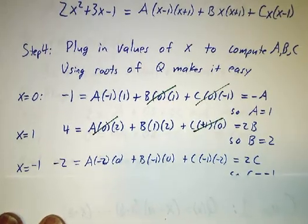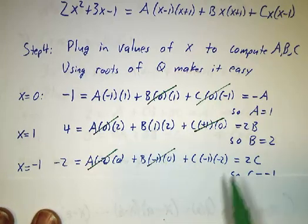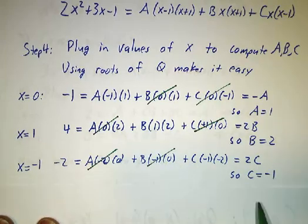You plug in x equals minus 1, and A doesn't contribute, and B doesn't contribute. And you just wind up with 2C is negative 2, so C is negative 1.